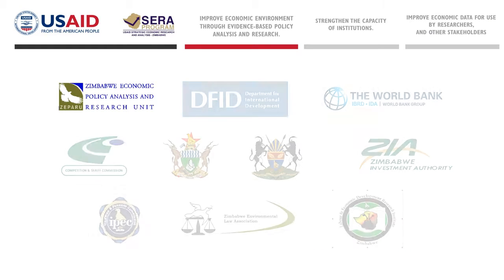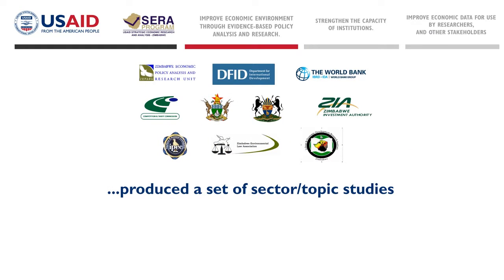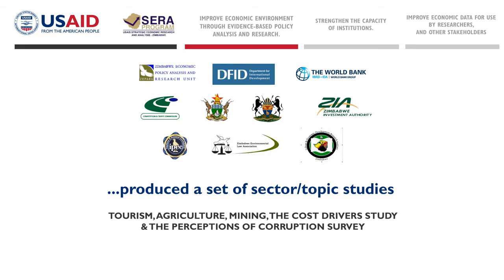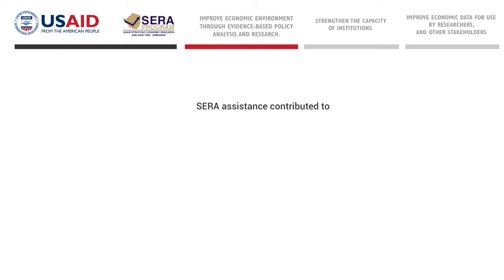Together with ZEPARU, other stakeholders and donors, SARA produced a set of sector and topic-specific studies. These covered tourism, agriculture, mining, the cost driver's study — which helped see the creation of the National Competitiveness Commission — the perceptions of corruption survey, which was a joint effort among SARA, CZI, ZNCC, SME-AZ, and the catalytic research on the business enabling environment, which helped initiate critical doing business reforms.